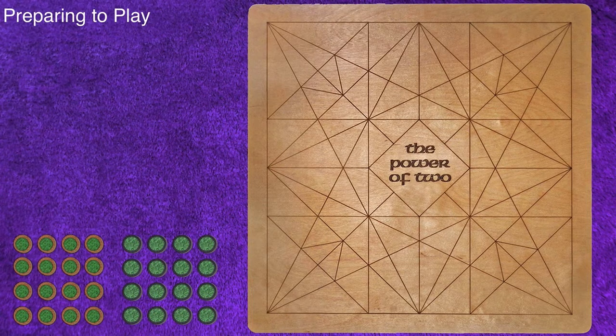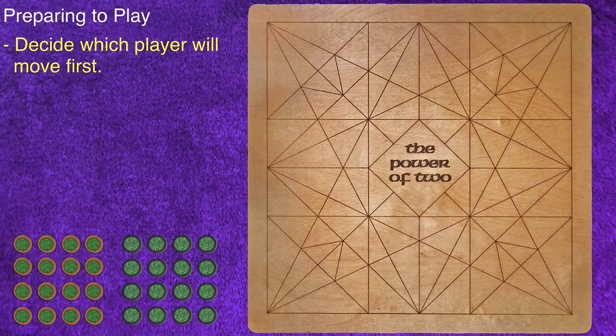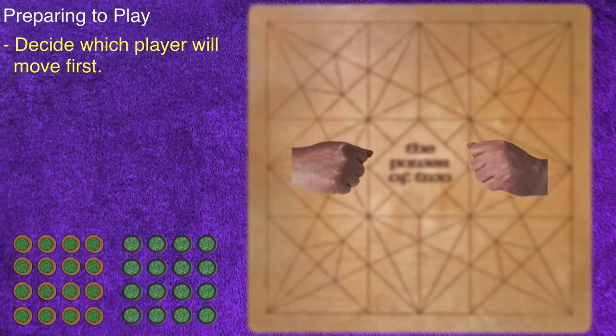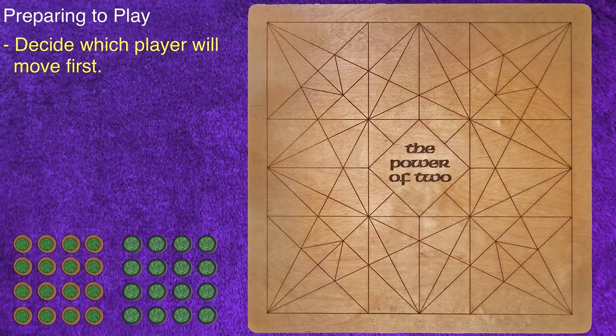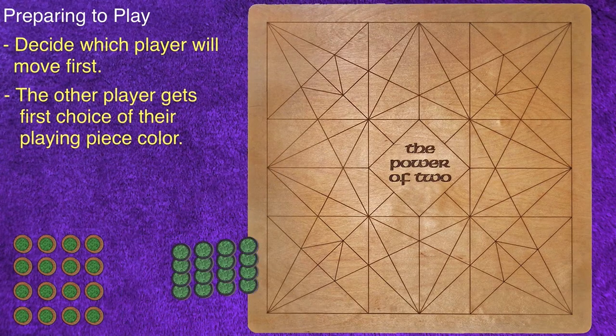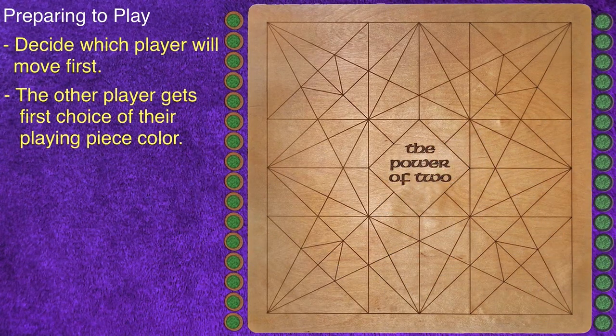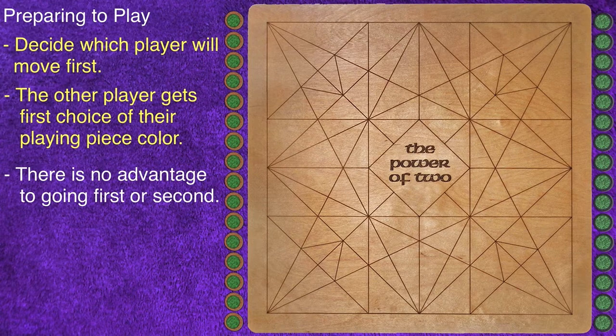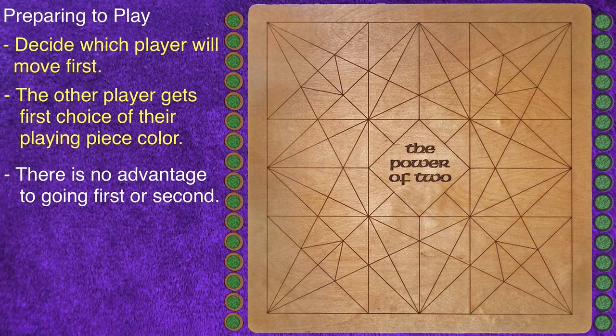Preparing to Play: First, the players must decide which player will make the first move. Any method can be used. The other player gets the first choice of their playing color. The game's design ensures that there is no advantage or disadvantage to going first or second.